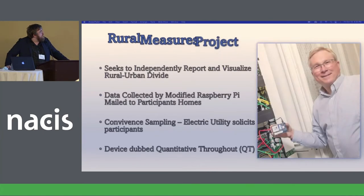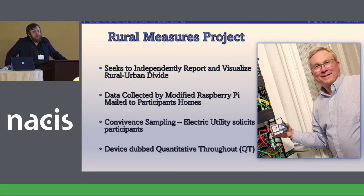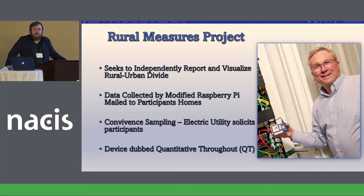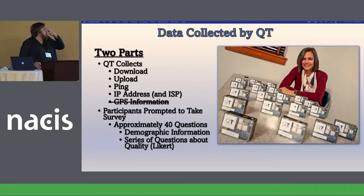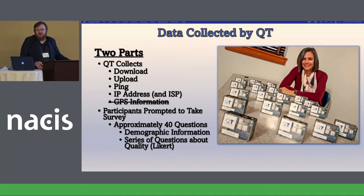The project I'm with is Rural Measures, and we're trying to independently report and visualize the rural-urban divide. We're collecting data out of a modified Raspberry Pi. We send these out through the public electric company, ask people if they'd like to participate, and they hook them up to their internet connection. It stays on for one week and takes a reading every five minutes — that's a lot of very granular data. Nobody has data anywhere near this granular. It records download, upload, ping, and IP address every five minutes. It also has a GPS unit.